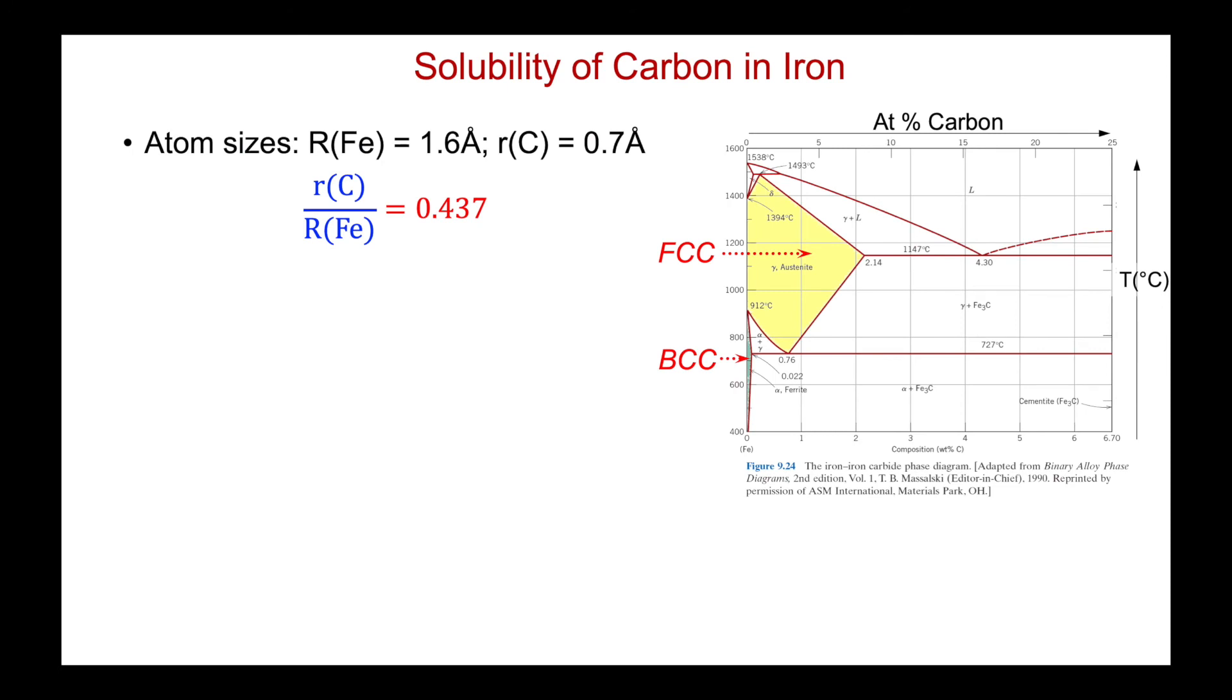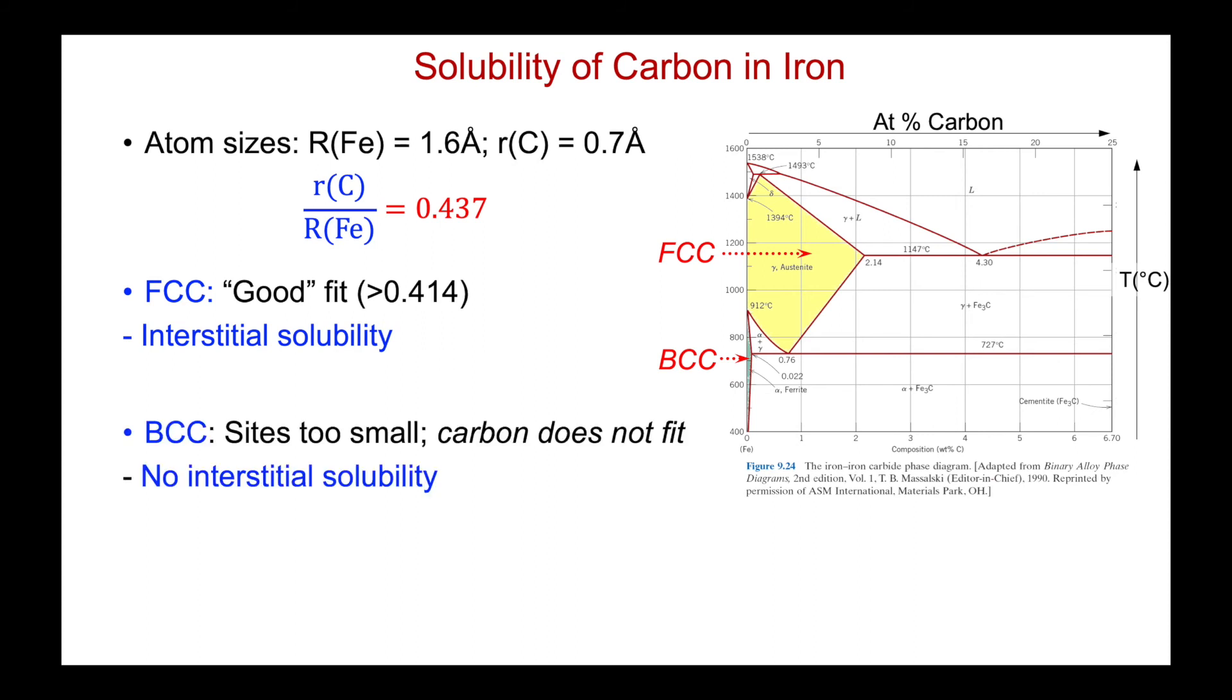So let's return to the solubility of carbon in iron. Here are the atom sizes. 1.6 angstroms is the radius of iron. The radius of carbon is 0.7 angstroms. And so the actual radius ratio is 0.437. So in the FCC structure, this provides a good fit into the octahedral holes. And we'll get interstitial solubility, as we mentioned, up to approximately 8 atom percent.